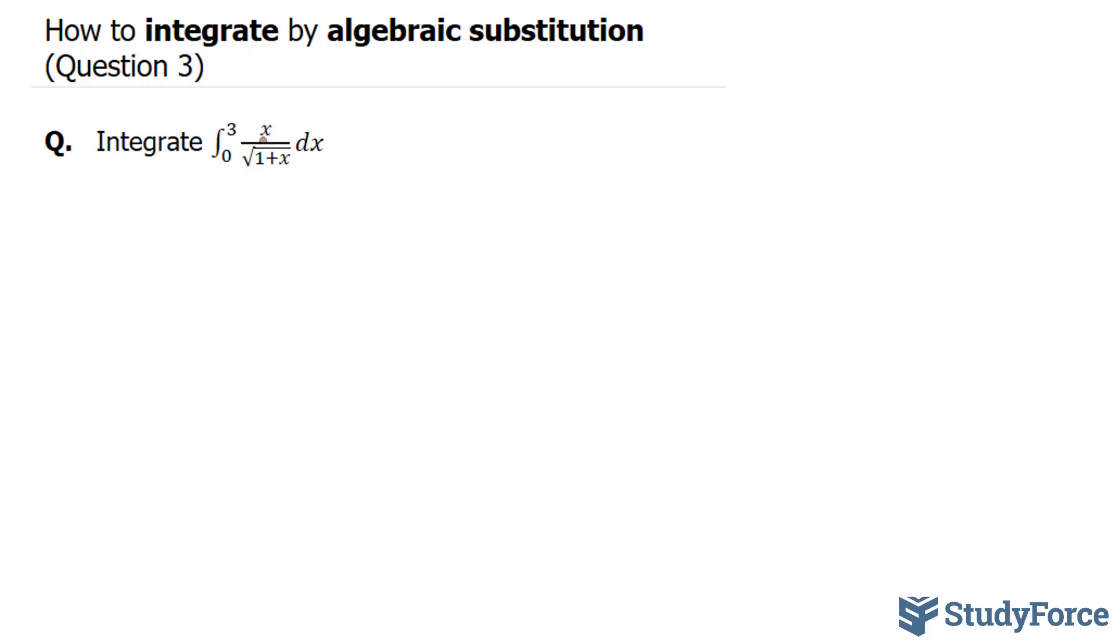Once again, we're faced with an expression containing a radical. So the first thing that we want to do is change this into fractional exponents as opposed to radicals. We have the integral between 0 and 3, that stays the same, the numerator. The denominator becomes 1 plus x to the power of half dx.